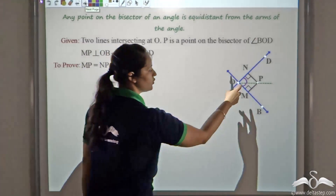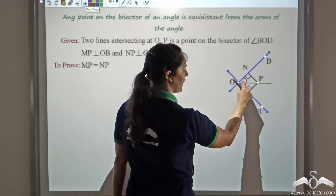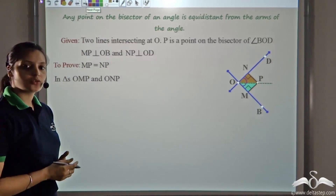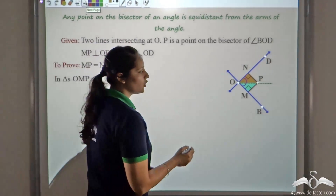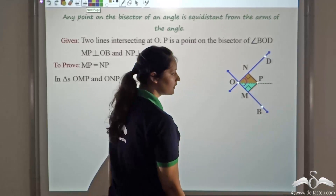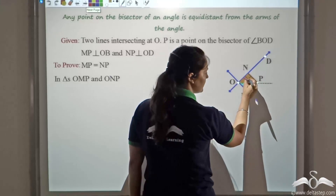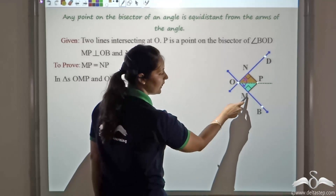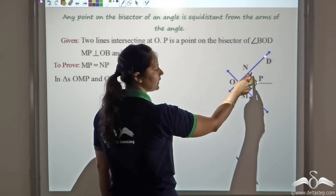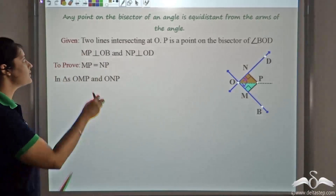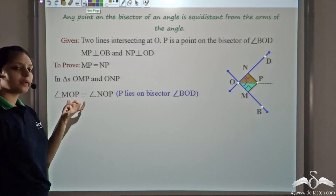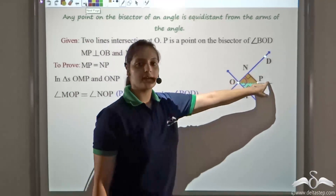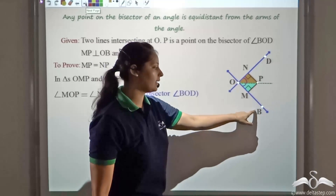Let us look at these two triangles: triangle OMP and triangle ONP. The first thing we observe is that OP is the angle bisector, so angle MOP is equal to angle NOP in these two triangles. This is because P lies on the angle bisector, which is the bisector of angle BOD.